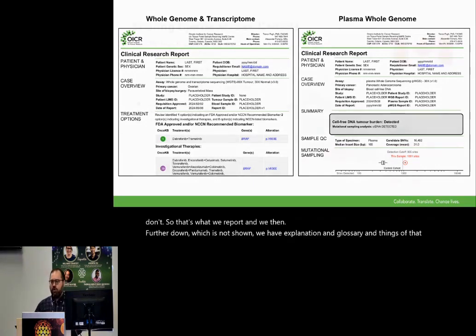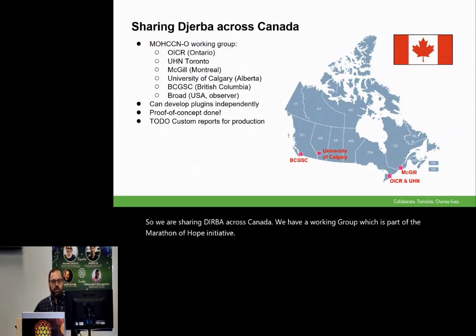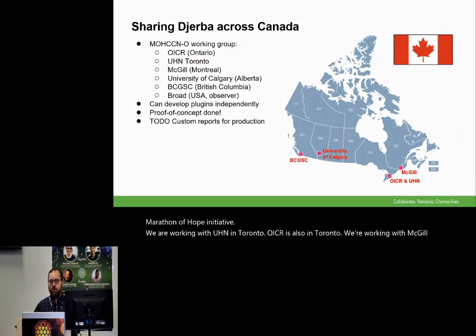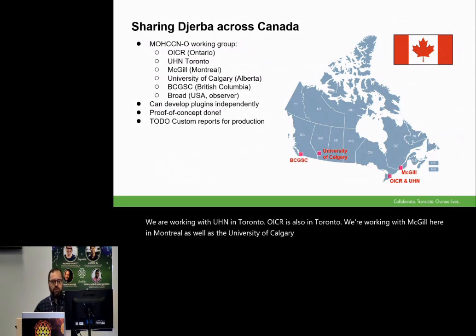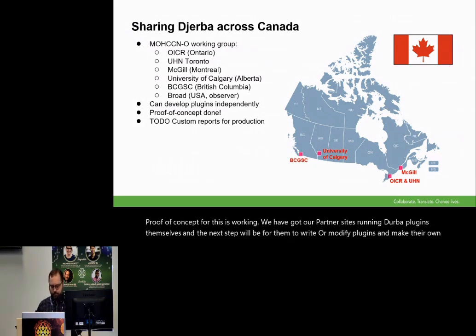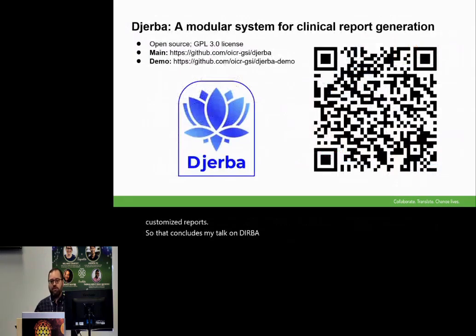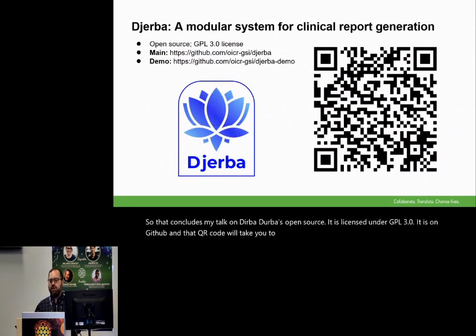We are sharing GERBA across Canada. We have a working group which is part of the Marathon of Hope initiative. We are working with UHN in Toronto — OICR is also in Toronto — as well as McGill here in Montreal, the University of Calgary, and the BC Genome Sciences Centre. The proof of concept is working; we have got our partner sites running GERBA plugins themselves, and the next step will be for them to write or modify plugins and make their own customized reports. GERBA is open source, licensed under GPL 3.0, and is on GitHub. That QR code will take you to a demo which you can download and run yourselves. Thank you very much.